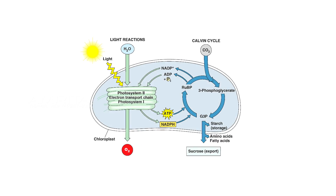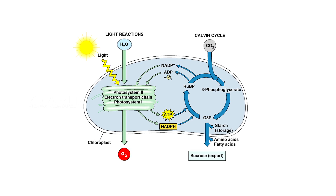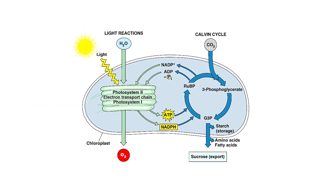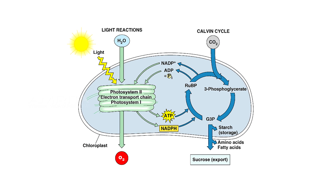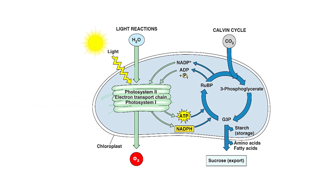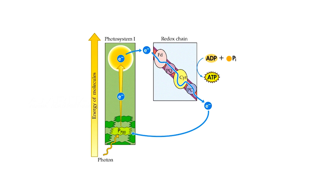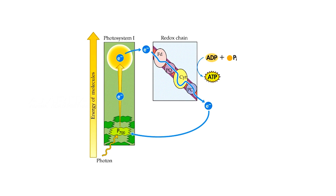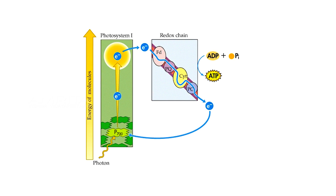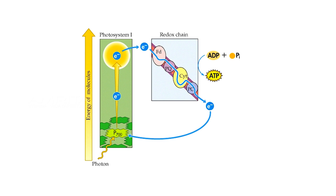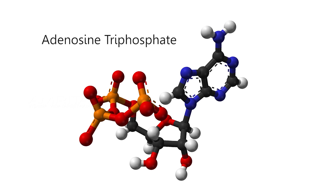The chlorophyll molecules absorb light in the form of photons, and this leads to the emission of electrons by the chlorophyll molecules. This drives the hydrogen ions across the membrane surrounding the thylakoid stack, leading to the formation of an electrochemical gradient which drives the production of ATP.